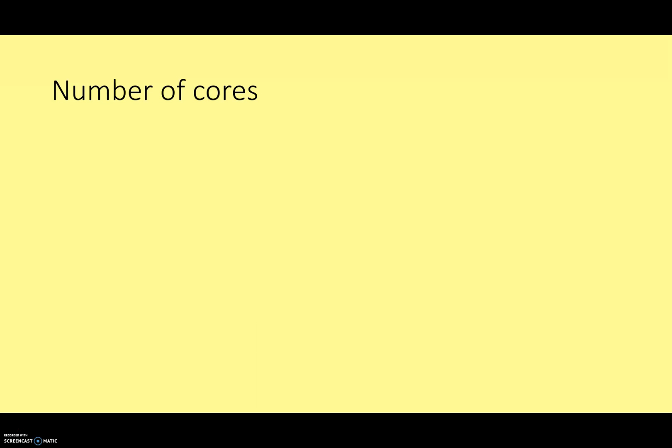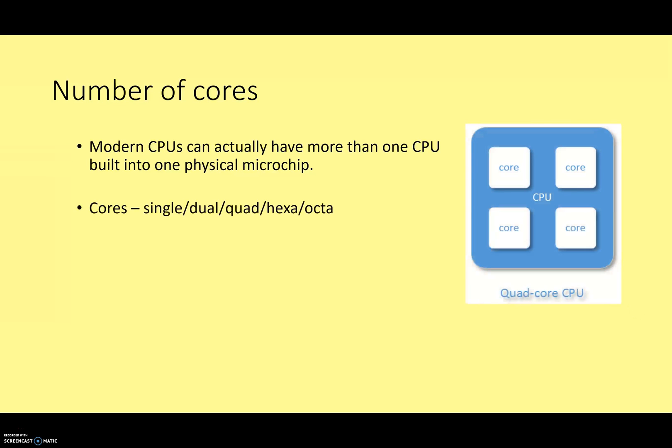Another factor that can influence the speed of your CPU is the number of cores. What do I mean by cores? Modern CPUs are actually more than one CPU built into a physical microchip. You can see in this diagram one physical chip that's divided into separate processing units. Even though it's one chip, it's actually like we've got four different CPUs. We call each of these a core. And we talk about single core, dual core, quad core, hexa core, and octa core.